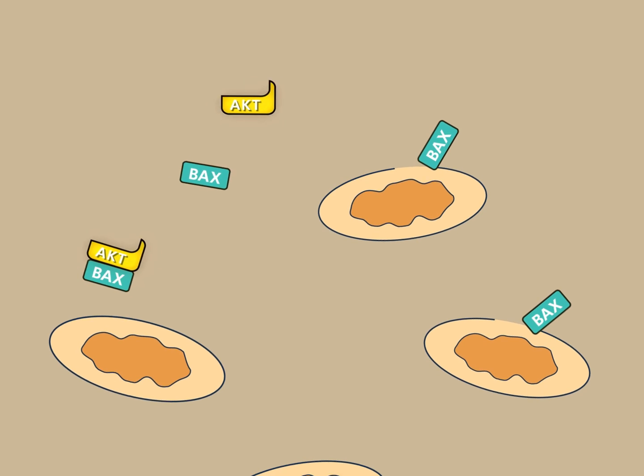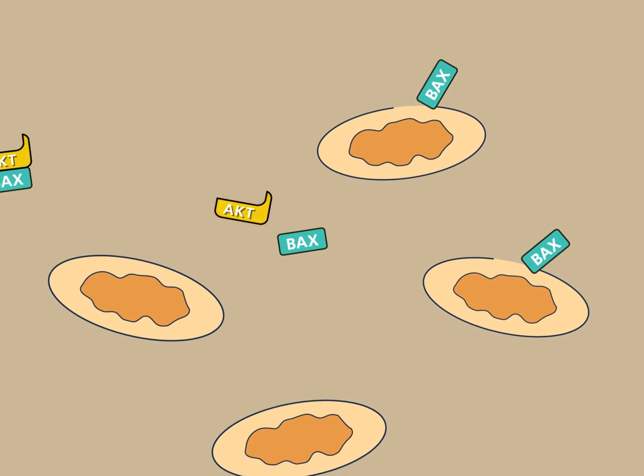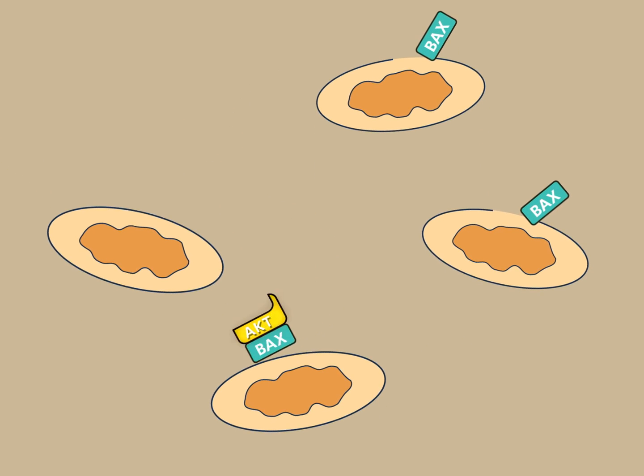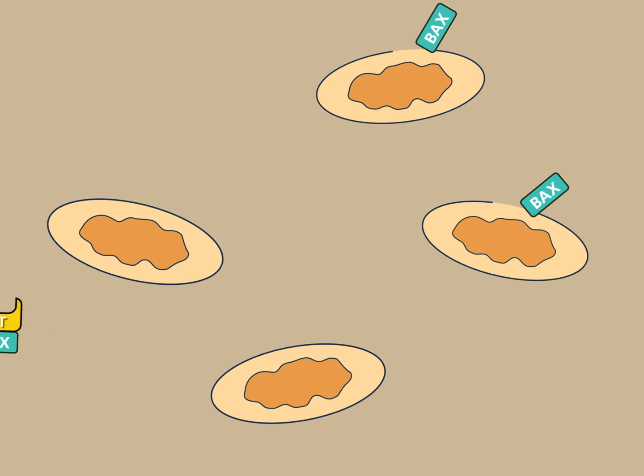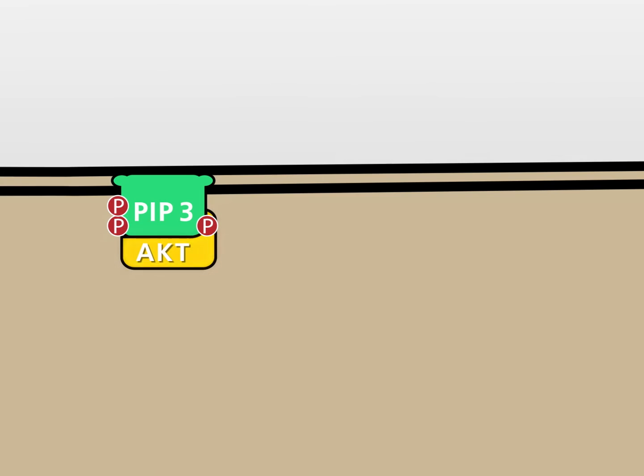ACT binds to BAX and hinders its ability to form holes in the outer mitochondrial membrane. In the absence of ACT, these holes lead to apoptosis via the caspase cascade.